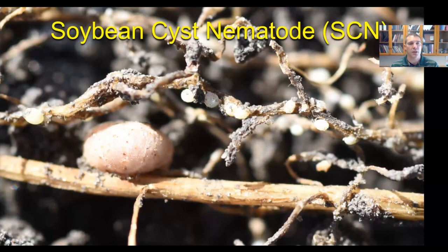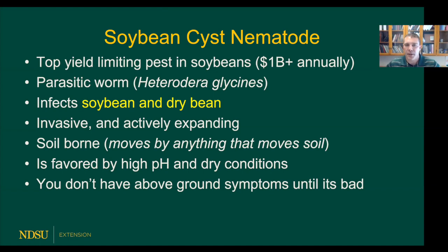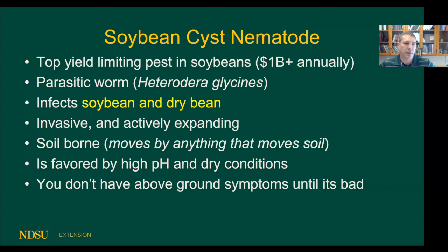A few things about SCN to get going: it is the top yield-limiting pest in soybeans. Nationally, about a billion and a half dollars is lost annually to this parasitic worm. The name of the parasitic worm is Heterodera glycines — if you've ever heard of HG types, that's where that comes from.